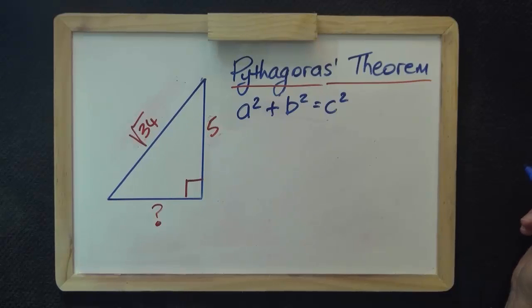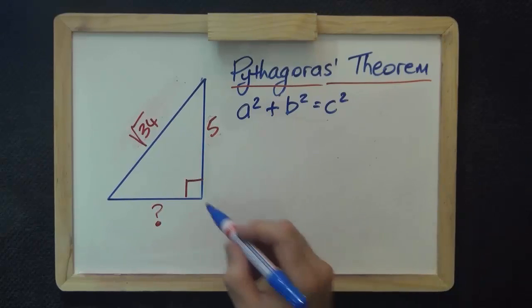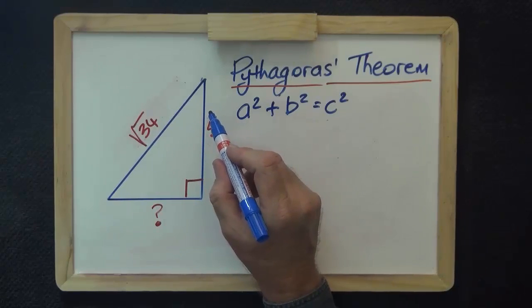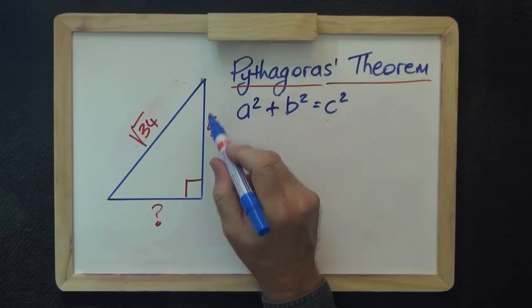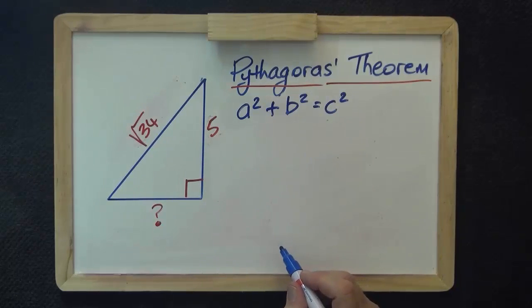For a second example, let me use what I did earlier, number two. The height was 5. The hypotenuse was root 34.